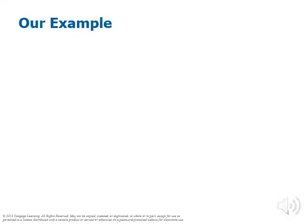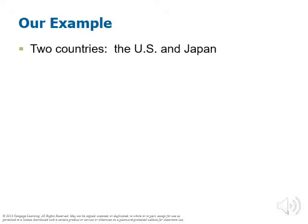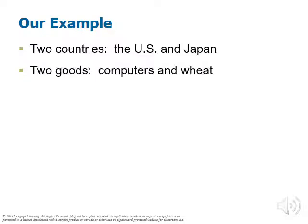We're going to use a simplified model. Our example is going to include just two countries — the US and Japan — and just two goods: computers and wheat. We'll assume that computers and wheat can be produced from only one resource. We'll use labor as that critical input, and we'll measure the input in terms of hours. We're going to look at how much of both these goods each country could produce, and also how much they could consume.